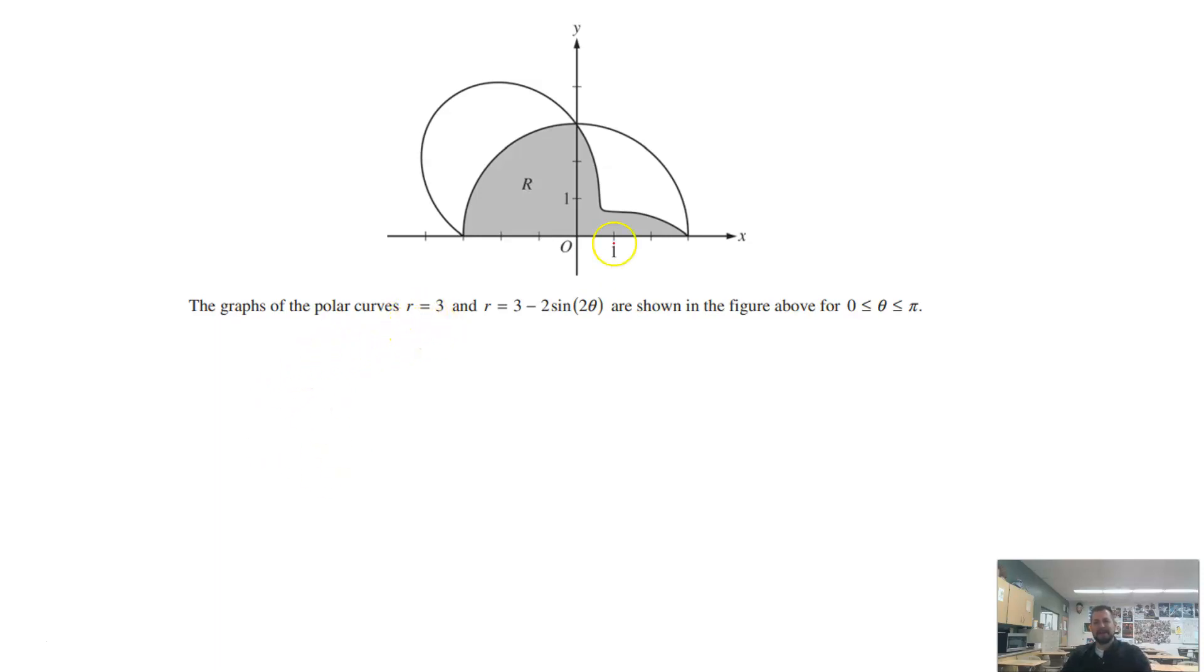We've got the graph of r equals 3. What that means is the entire time as we measure from the origin, the radius is 3. So this right here is our r equals 3, and then the other one is r equals 3 minus 2 sine of 2 theta. So that starts over here and then goes up and around like that, and they're shown in the figure above. We've got these two functions.